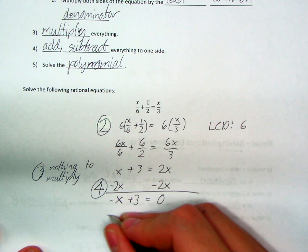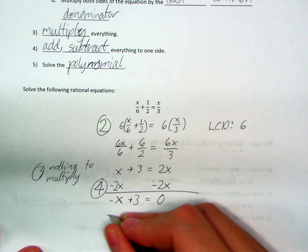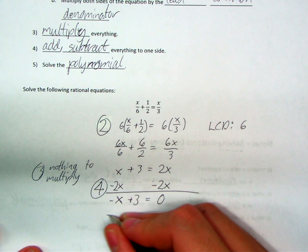So I can solve that polynomial. And if I solve the polynomial, I'm going to add x to both sides. I've got 3 is equal to x. 3 is equal to x.